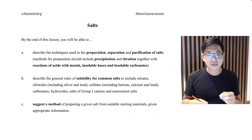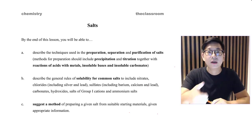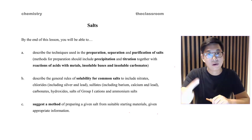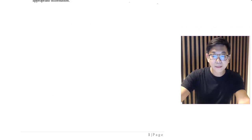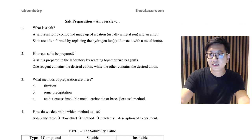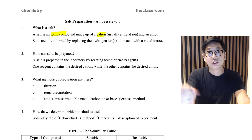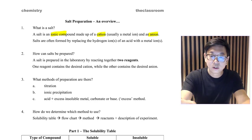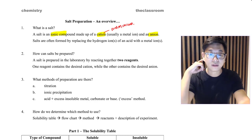Today we're going to cover the chapter known as salts. In this chapter we're going to study how to prepare salts, how to choose reactants, and how to describe the matter. First things first, what is a salt? A salt is an ionic compound that is made up of a cation — usually a metal — and an anion. The cation doesn't always have to be a metal; it could also be an ammonium ion.